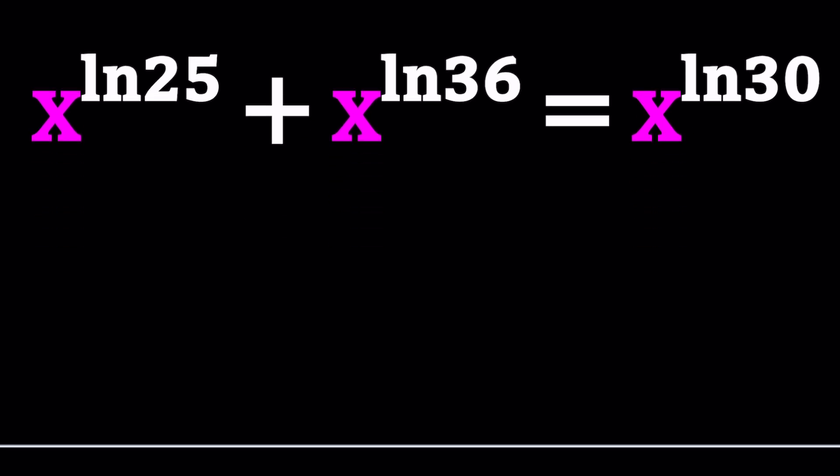Think about something similar: x to the power root 2 plus x to the power root 3 equals x to the power root 5. How do you solve such an equation? You could probably divide everything by something so that you can get a 1. Maybe since x to the power root 5 is the highest power, we can divide both sides by x to the power root 5.